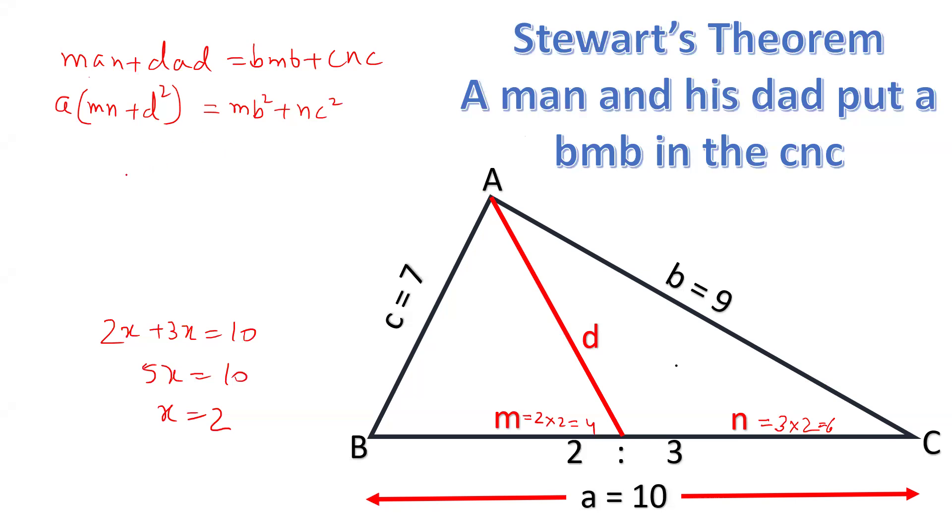Now we have to simply put these values in the equation. The value of A is 10, the value of M is 4, the value of N is 6, so 4 into 6. MN plus d² we have to calculate.